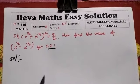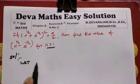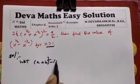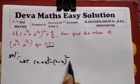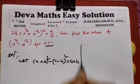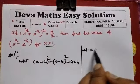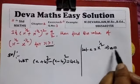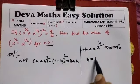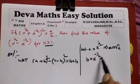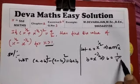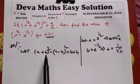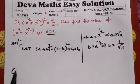Let's begin. We use the algebra formula: (a + b)² minus (a − b)² equals 4ab. Here we have a equal to x to the power 1/2, which is root x, and b equal to x to the power minus 1/2, which is 1 by root x.